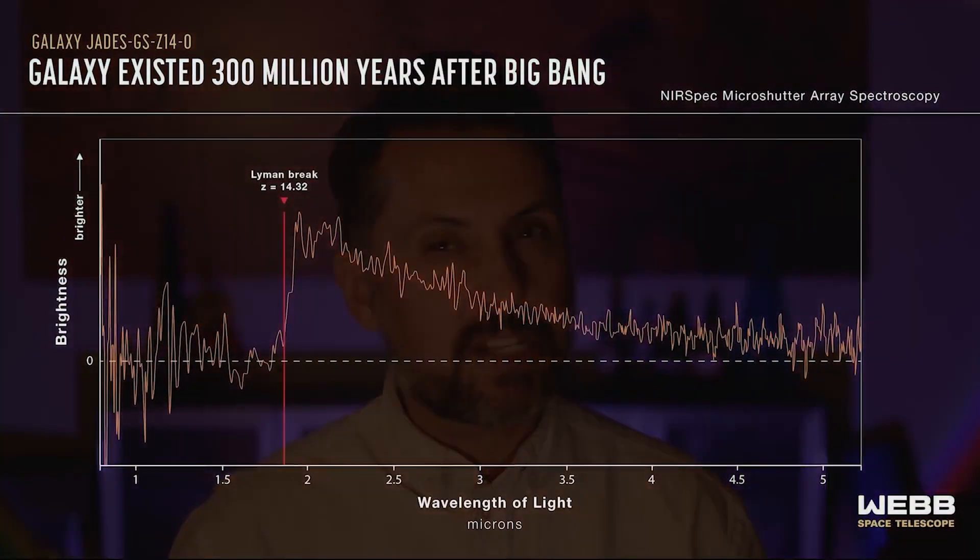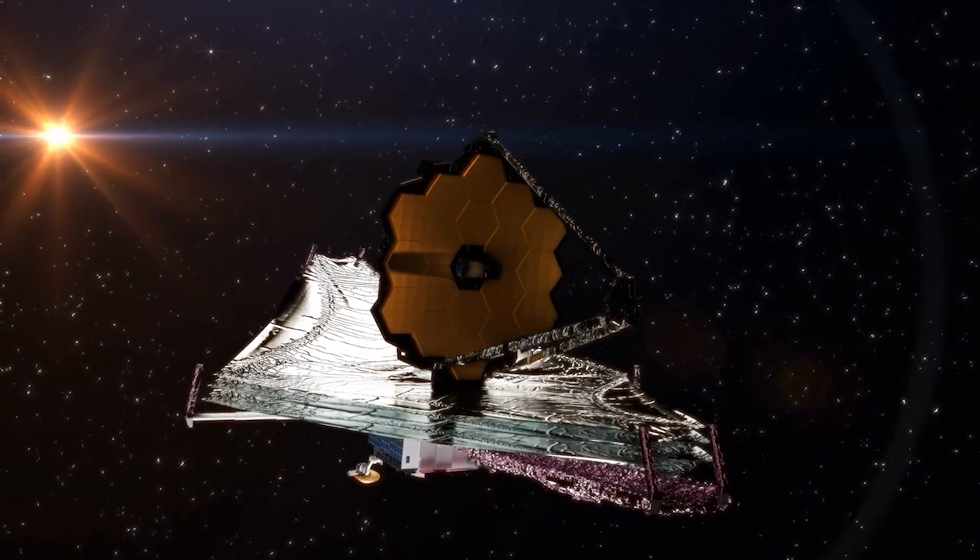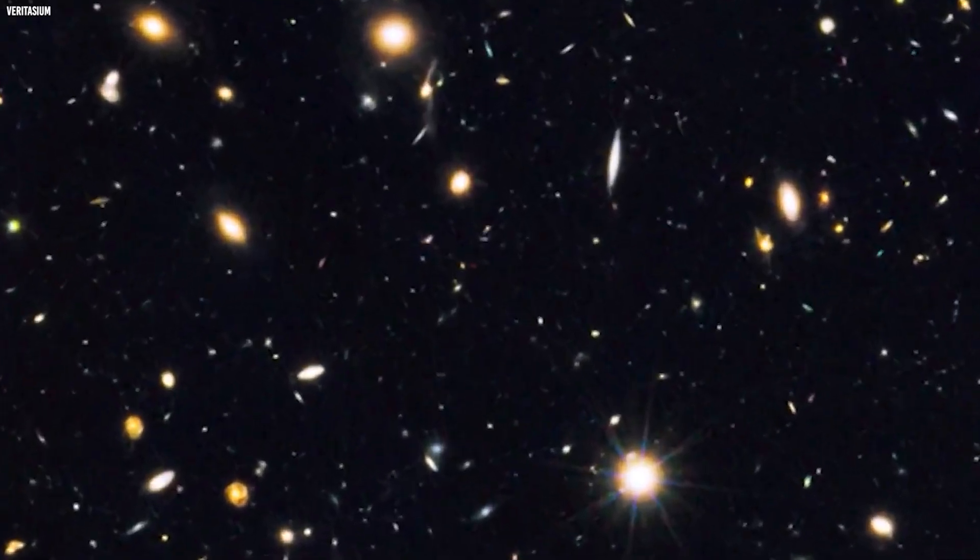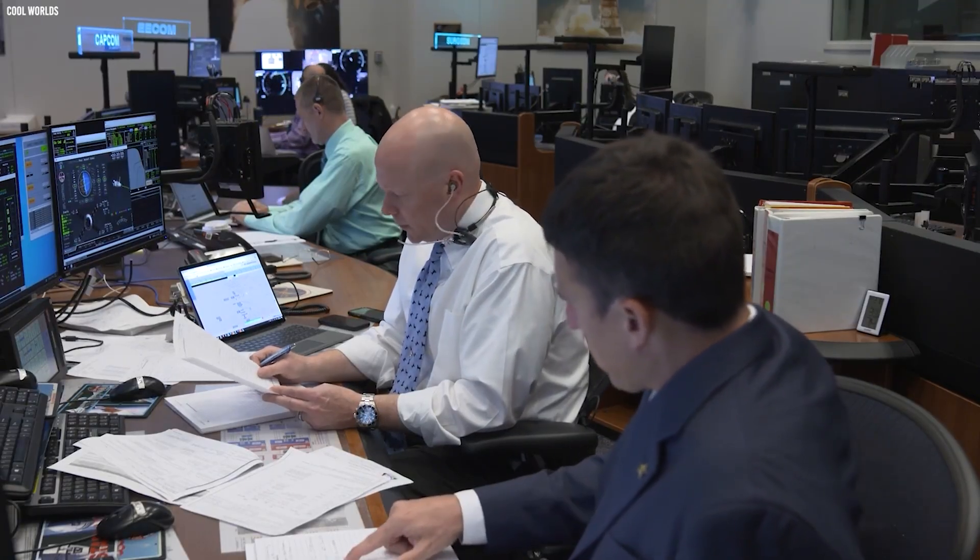This galaxy, given the name JADES GSC 14-0, is at a redshift of 14.32. The Webb telescope has stunned us yet again. This time, by uncovering a galaxy so ancient, it's forcing scientists to rethink long-held assumptions.